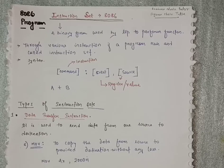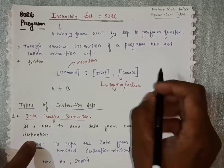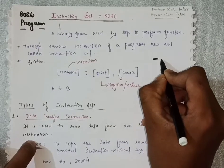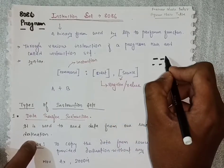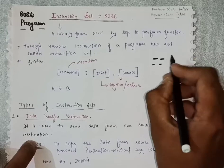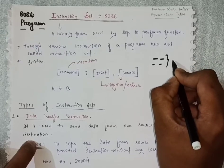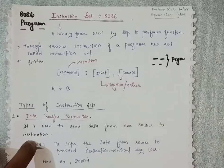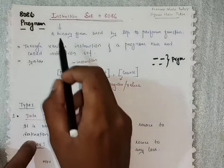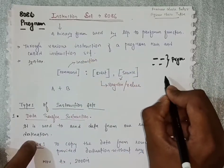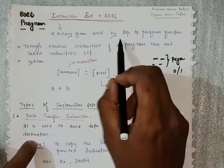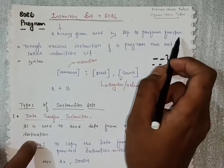What do you mean by instruction? The word instruction indicates some command. We have some command, some line of command, and these lines of command or instructions combinedly work together and give a program. That is written in binary form — as you know, a computer only understands zero or one, which is used by the microprocessor to perform functions.